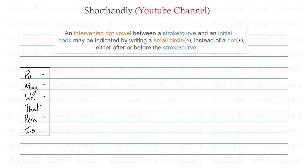Before understanding the complete statement, first of all let's have a look at these two words: 'dot vowel.' From the previous lessons we already know that there are some vowels in Pitman's shorthand which are represented by a dot. The vowels 'pa', 'me', 'we' — those in 'pen' — are the vowels represented by a dot. So these two words 'dot vowel' in this statement are simply talking about these vowels.